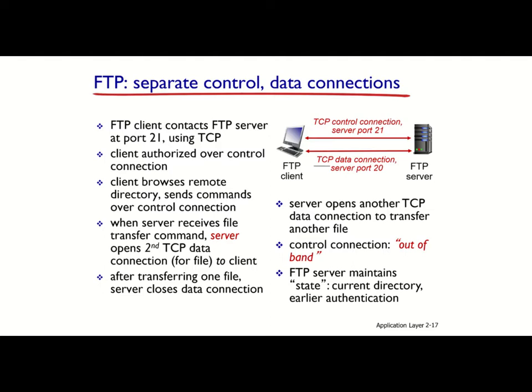If the client wants to receive another file, it sends another request over the control connection to the FTP server. The FTP server can then create a new data connection and send the second file over another TCP data connection. For each file, the FTP server creates a new data connection because the previous one was closed immediately after the data was transferred. This behavior of FTP is similar to non-persistent HTTP because for every object you need one separate data connection.